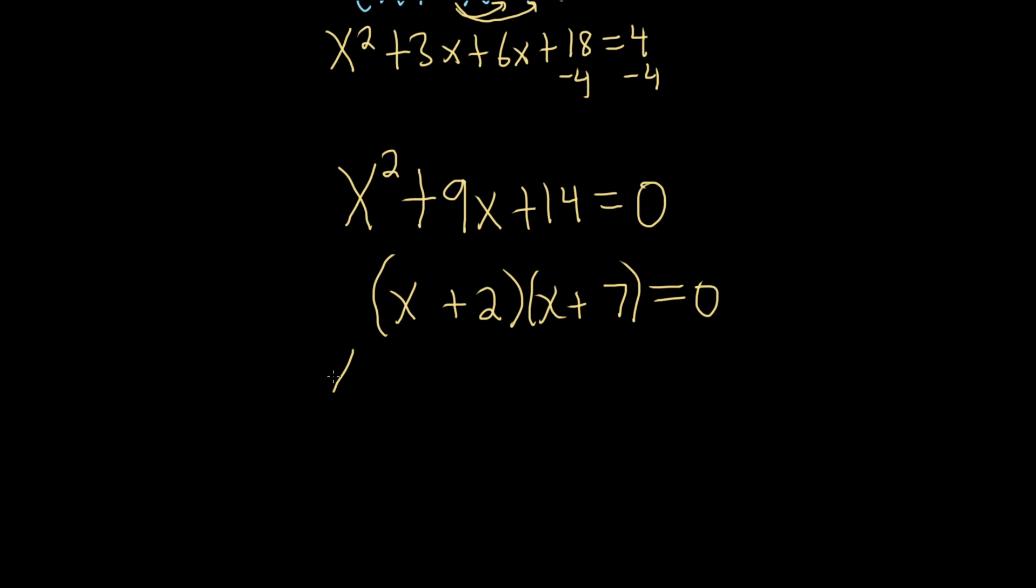So we set each piece equal to 0. So x plus 2 equals 0. And then x plus 7 equals 0. And subtract 2 so you get negative 2. And subtract 7 so you get negative 7. So these aren't the answers.